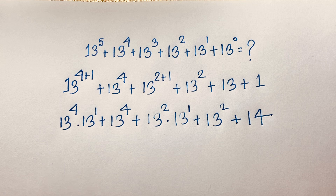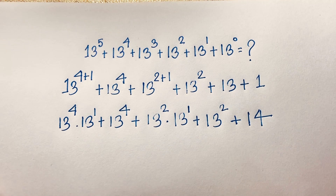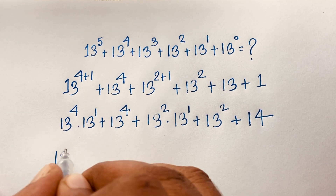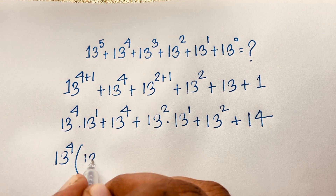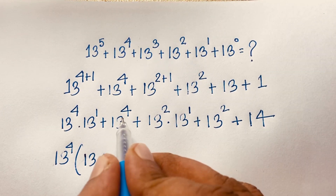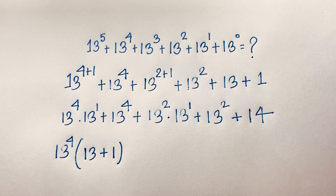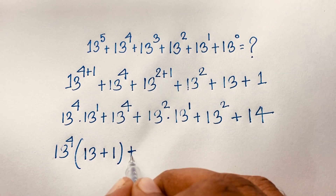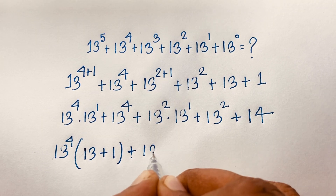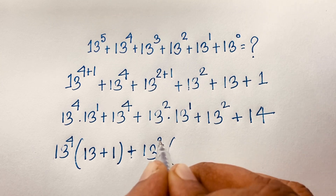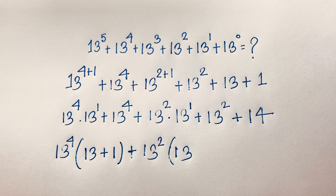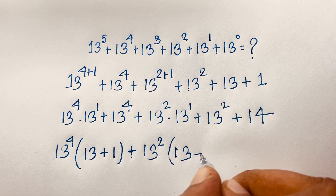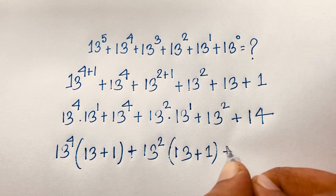At this moment, 13 power 4 is a common factor. Dividing through gives 13 and 1. Then 13 power 2 is also common in the remaining terms. Dividing those gives 13 and 1 again. And here we still have 14.